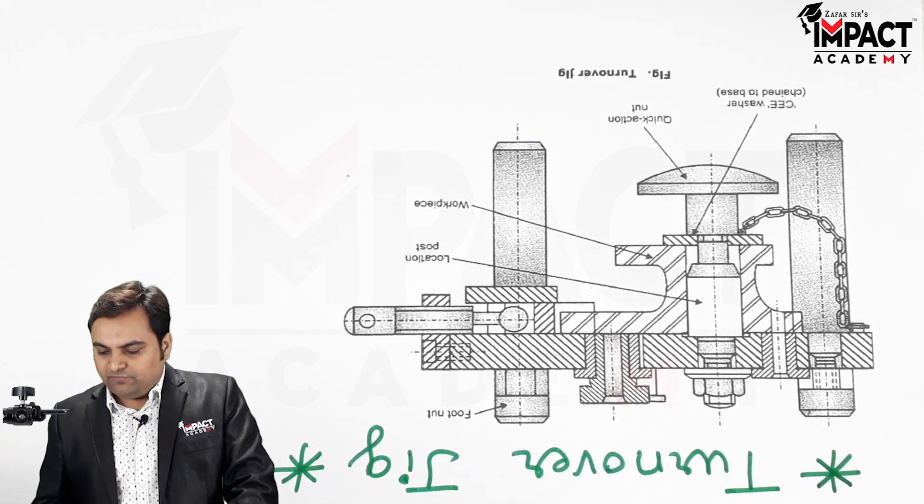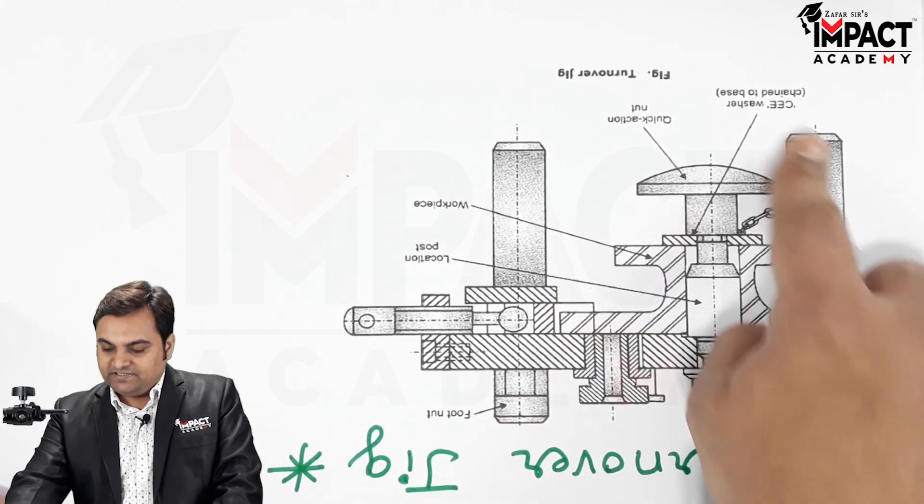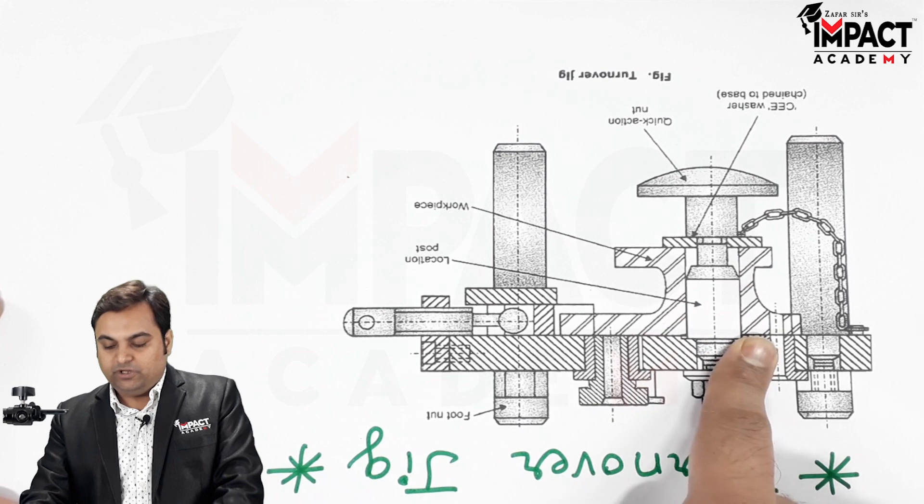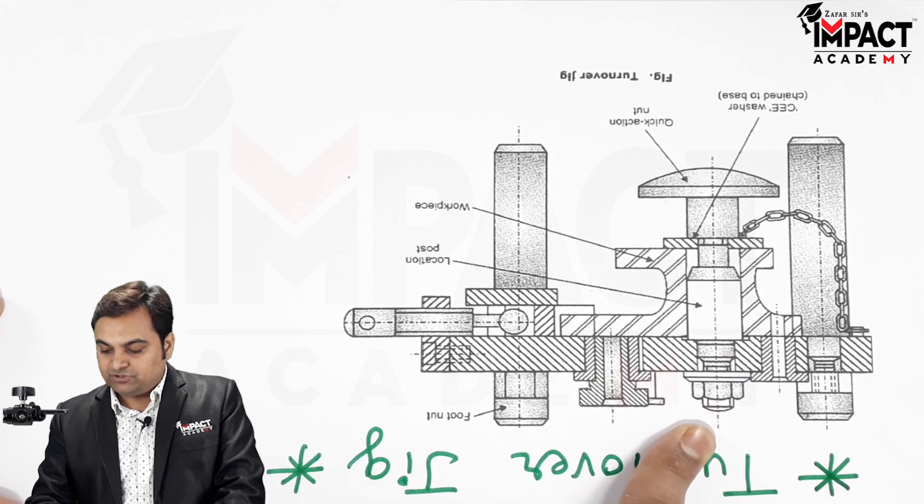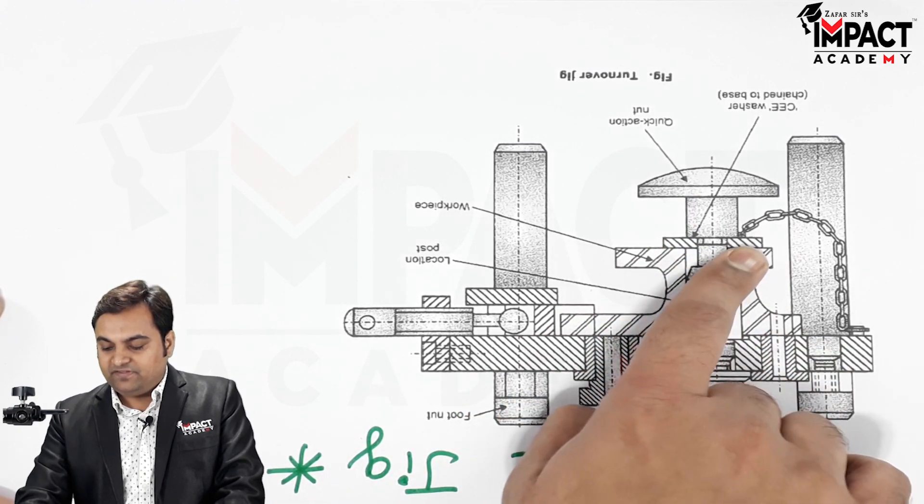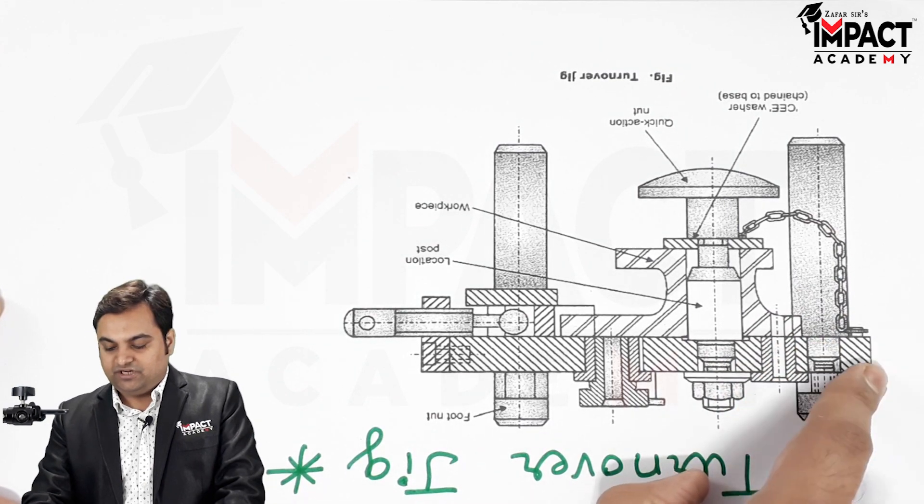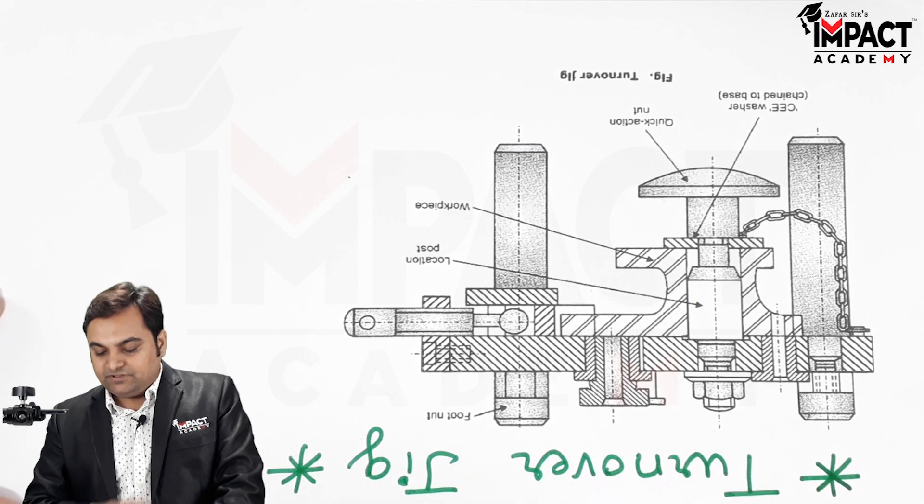What are the parts of this turnover jig? Here there is a quick action nut, then at the same time there is a washer. Here is the workpiece which is kept in which the hole needs to be drilled. Then there is this location post and after that the quick action nut. This seawasher is connected with the help of a chain which is attached to the jig body.